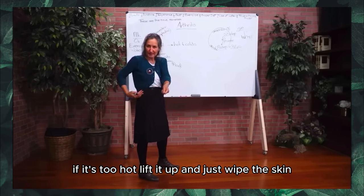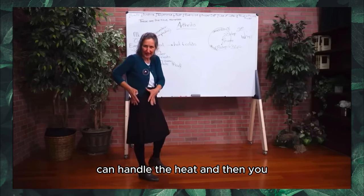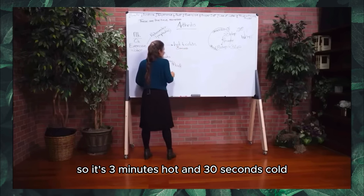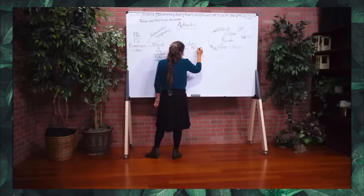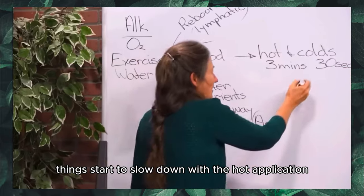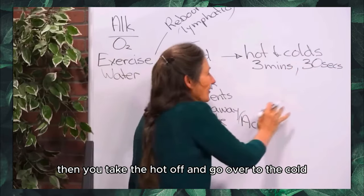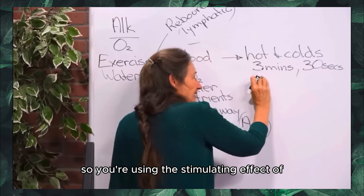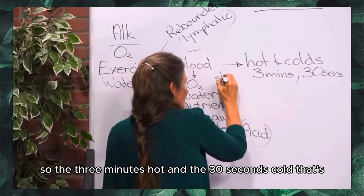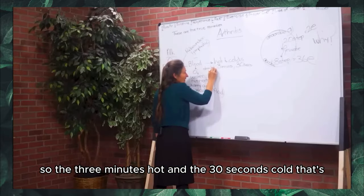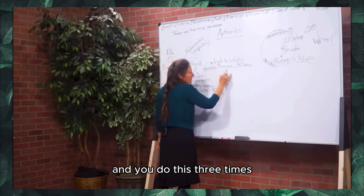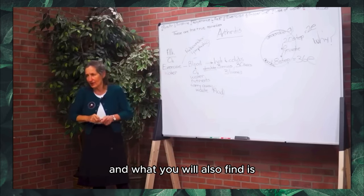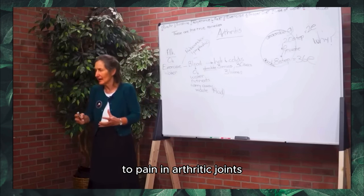If it's too hot, lift it up and wipe the skin, then put it back down. Keep it there for three minutes — three minutes hot and 30 seconds cold. After three minutes things start to slow down with the hot application, then you take the hot off and go to the cold; after 30 seconds things slow again. You do this three times. It's a powerful mover of blood into the area and can bring great relief to pain in arthritic joints.